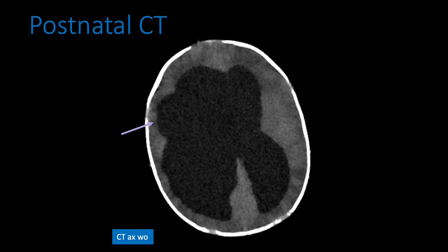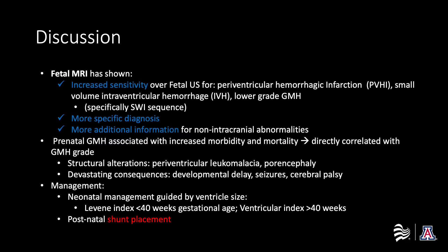Axial non-contrast CT head obtained a few months after birth demonstrates evolution of intraparenchymal hemorrhage and germinal matrix hemorrhage. There is significant worsening of ventriculomegaly with progression of porencephalic changes to encephalomalacia.